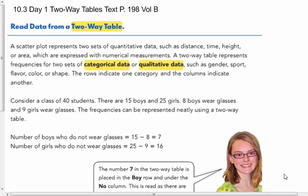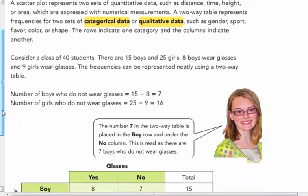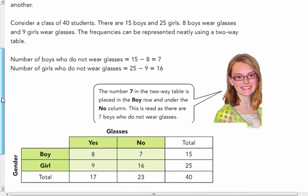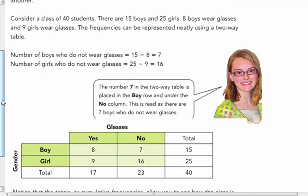So it's non-numerical that we're going to be talking about. Consider a class of 40 students. There are 15 boys and 25 girls. Eight boys wear glasses and nine girls wear glasses. The frequencies can be represented neatly using a two-way table. The number of boys who do not wear glasses would be seven. There were 15, eight of them do, seven of them don't. The number of girls who do not wear glasses would be 16.